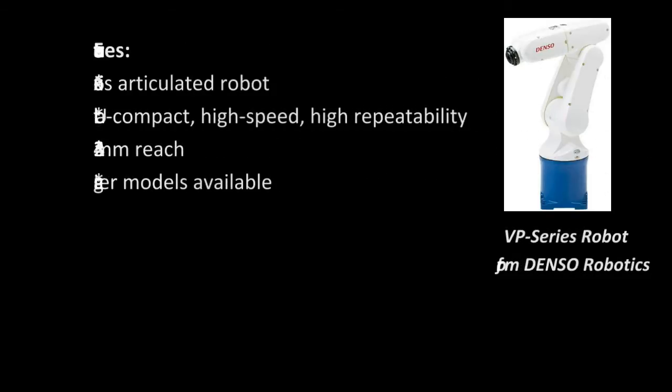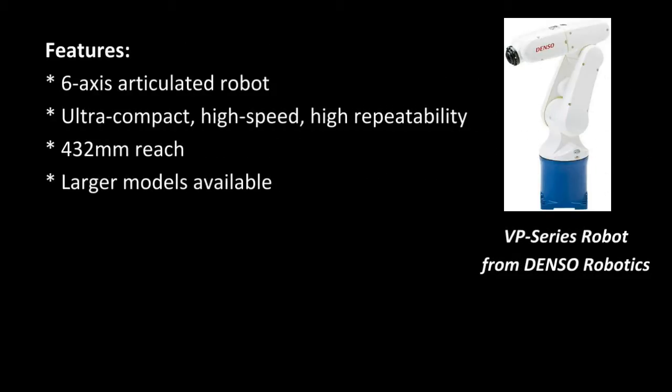The robot is a VP series six-axis articulated arm from Denso Robotics. This particular robot is one of their smallest with only 432 millimeters of reach, but the code that we're showing today is applicable throughout their product line from this robot all the way up to their 1300 millimeter reach VM series.